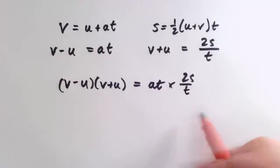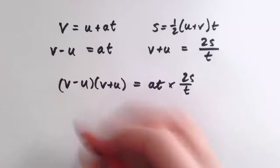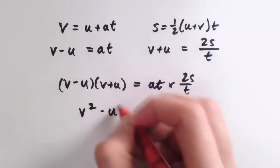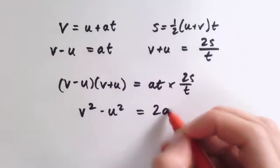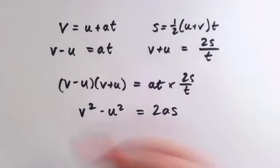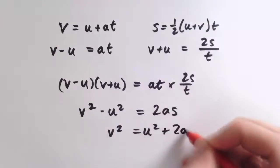And then the left-hand side, either multiplying it out or recognizing it as a difference of two squares, we get v squared minus u squared, and on the right-hand side the t's cancel, so leave 2as, which is the last SUVAT equation, or you can also sometimes write that v squared as u squared plus 2as.